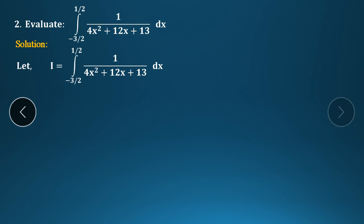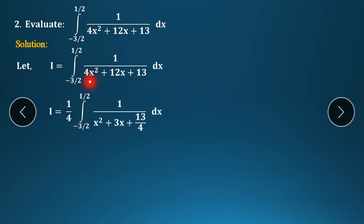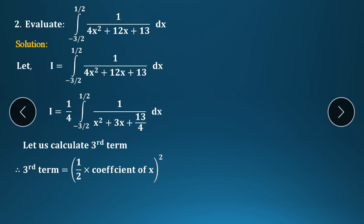Solution: I equals the given example. Since the coefficient of x² is 4, we take 4 as common factor outside: I = (1/4) × integration. Dividing each term by 4: x² + 3x + 13/4. Now the coefficient of x² is 1, so we can calculate the third term.